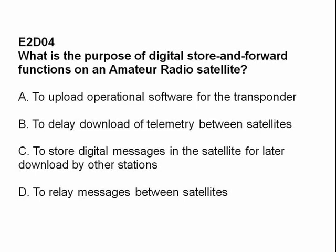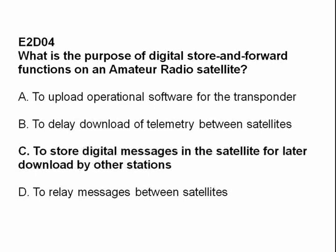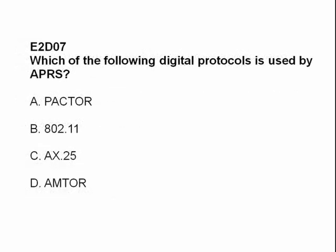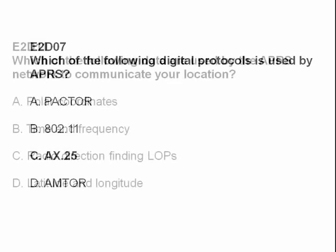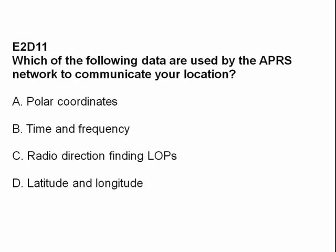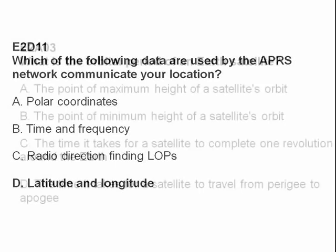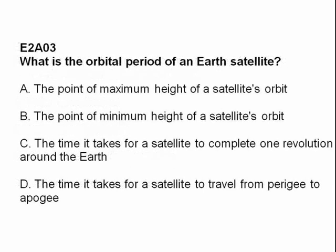The answer is C: to store digital messages in the satellite for later download by other stations. Which of the following digital protocols is used by APRS? Answer C: X.25. Which of the following data are used by the APRS network to communicate your location? Answer D: latitude and longitude.